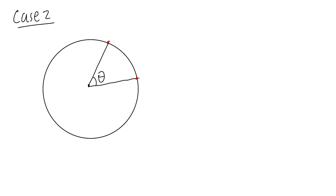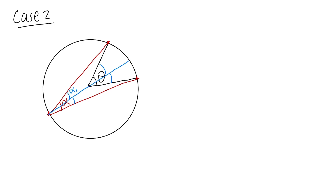For Case 2, here's one point, here's another point, and we pick another point somewhere else on the circle, then connect the dots. Here is our angle alpha. To prove it, we can use Case 1 by drawing a diameter from this point through the center. Notice we've broken alpha into two smaller angles alpha 1 and alpha 2, and theta into two smaller angles theta 1 and theta 2.